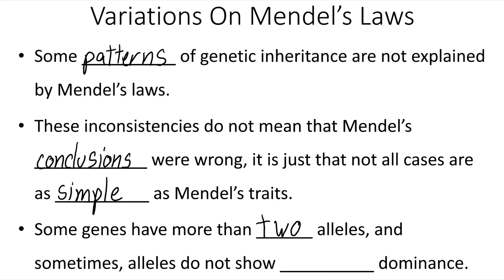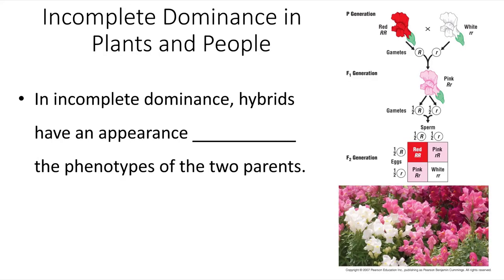It also turns out that sometimes alleles do not show complete dominance. For instance, in the case of snapdragons — a different type of flower — there are two different alleles: the red flower color allele and the white flower color allele. If you take a true-breeding red snapdragon and a true-breeding white snapdragon and breed them together, all of the offspring will be pink, having both one red allele and one white allele. When the hybrids have an appearance in between the phenotypes of the two parents, we say those two alleles are incompletely dominant to each other. White and red together make pink for these flowers.